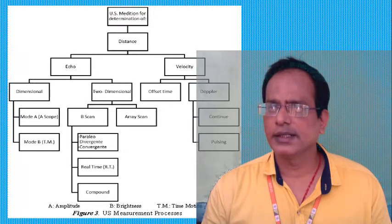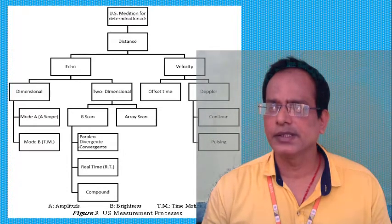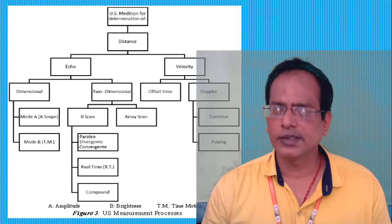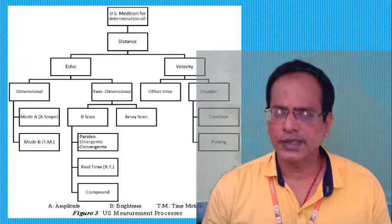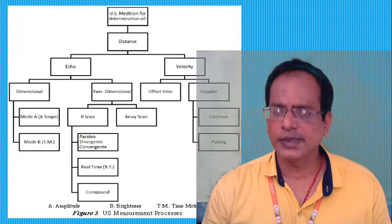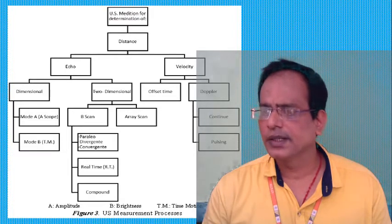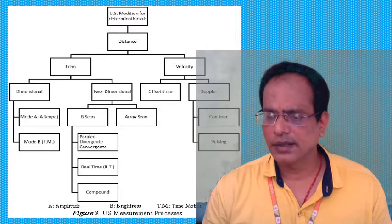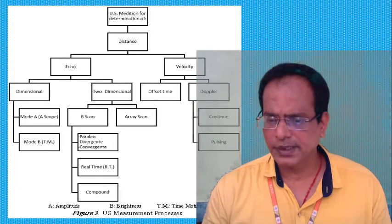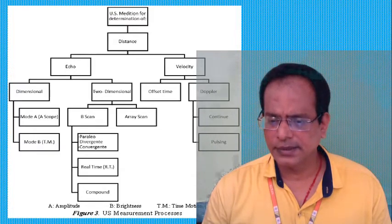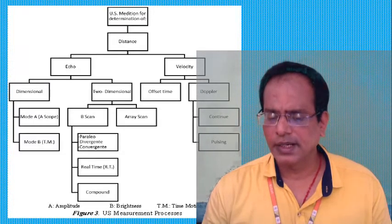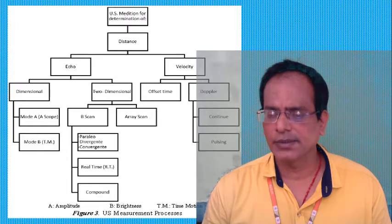Ultrasound diagnosis depends on distance and echo. Echoes and velocity are measured using scanning modes: A-scan, B-scan, and M-scan. The Doppler effect with continuous and pulsed waves is also used. A stands for amplitude, B for brightness, and TM for time-base mode — these imaging modes are used to obtain images for diagnosis.